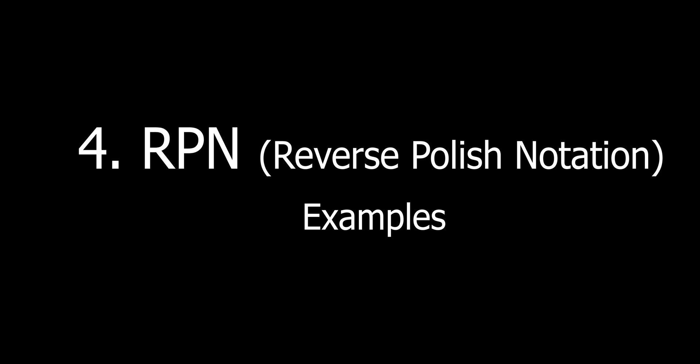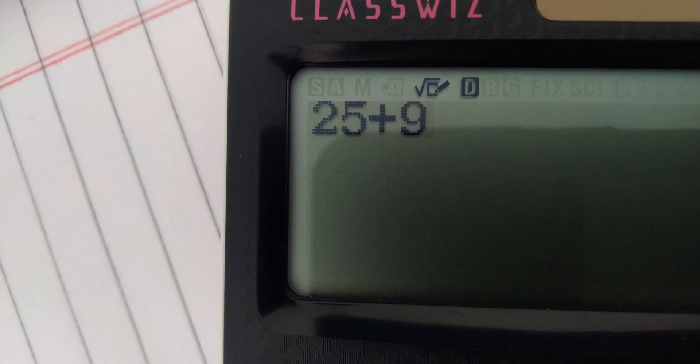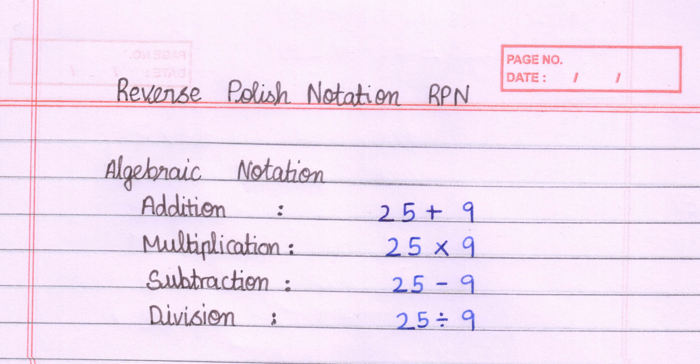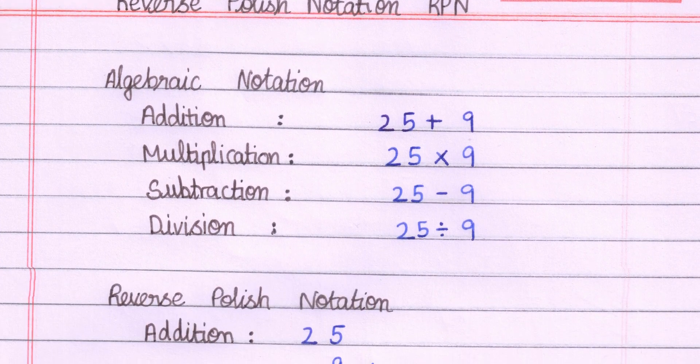All Swissmicros calculators use a specific notation called reverse polish notation. Let's see what it means briefly. You do calculations like this in your normal calculator. In your junior grade in school, you would have added 25 and 9 like this.